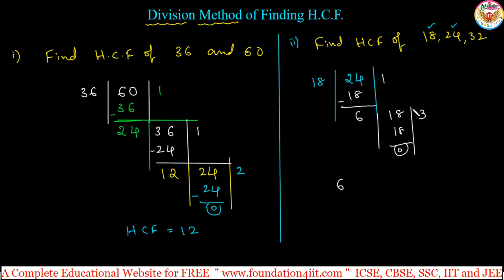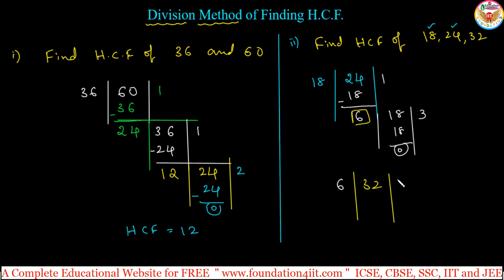Now take this HCF of 6 and the third number 32. Among 32 and 6, the largest goes in the middle. In the 6 table: 6 times 5 is 30; subtract to get remainder 2. Then this 6 becomes the dividend. Continue: in the 2 table, 2 times 3 is 6, remainder 0 is obtained.